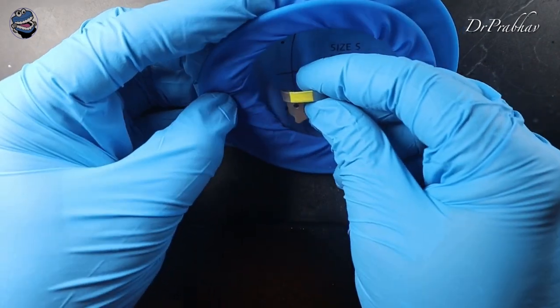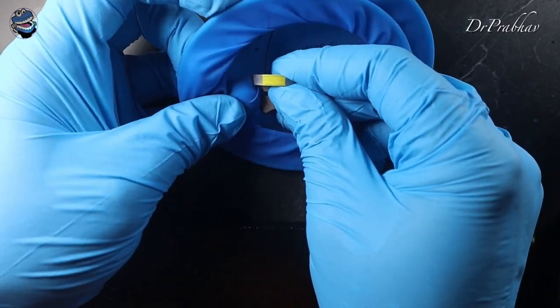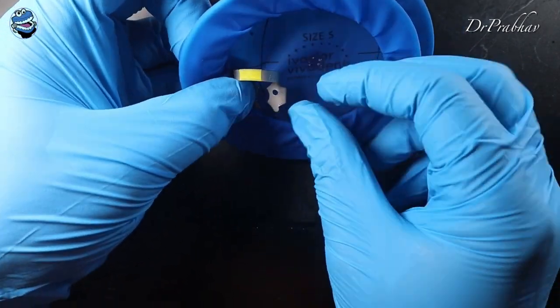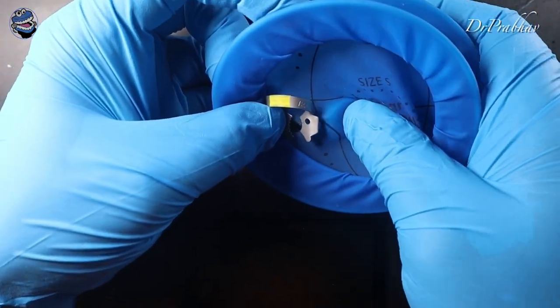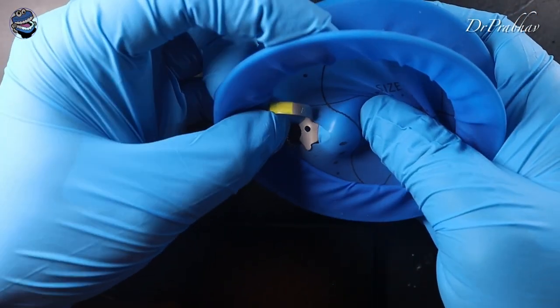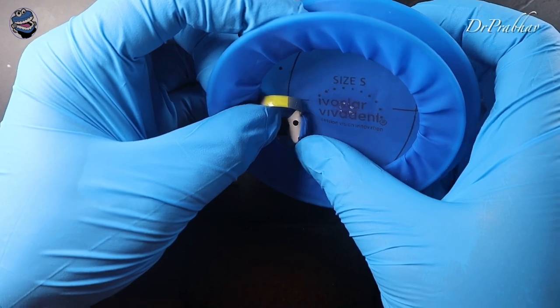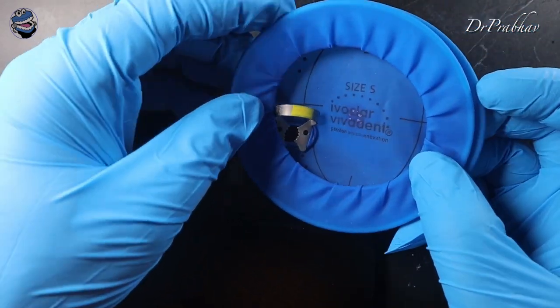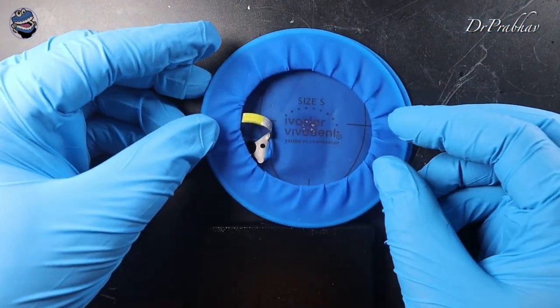We will place the wings of this clamp directly into the punched hole from both sides and get it engaged like this. Once we are done, it becomes a single unit.